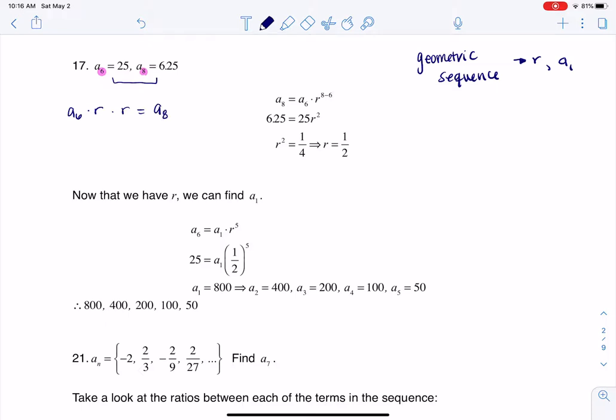So I can connect those two ideas, I can say a sub 6 times r squared is equal to a sub 8, and that's what you see me doing right over here. I plug in my a sub 8 value, my a sub 6 value, and then I get this r squared equaling 1/4.